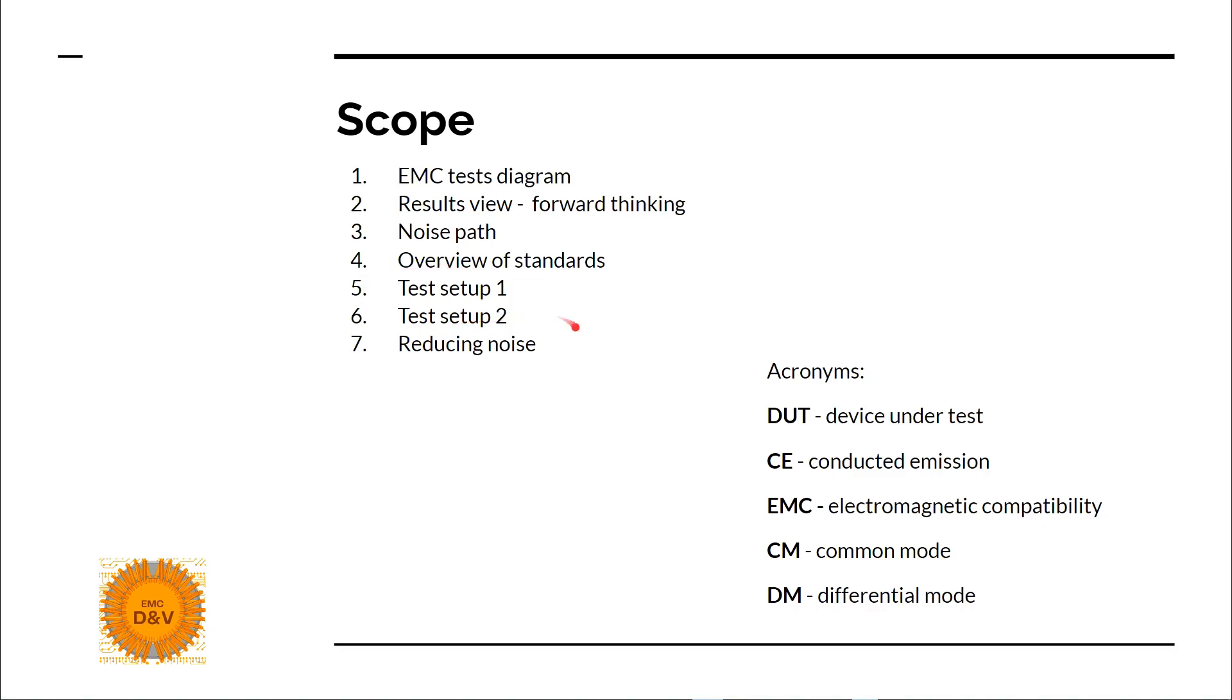We'll cover two types of test setups and how to reduce noise in our device. We'll use some acronyms: DUT for device under test, CE for conducted emission, EMC for electromagnetic compatibility, CM for common mode, and DM for differential mode. Your results consist of two types of noise: common mode and differential mode.